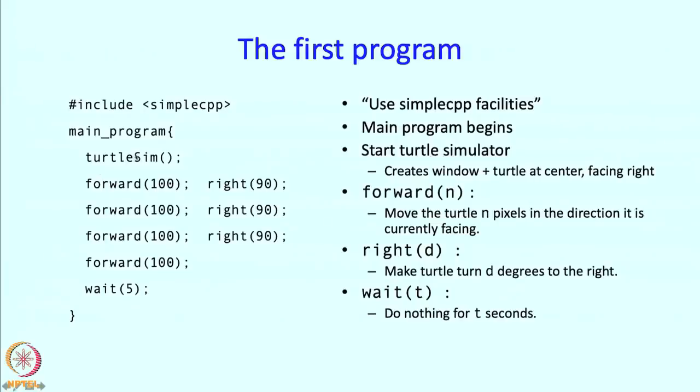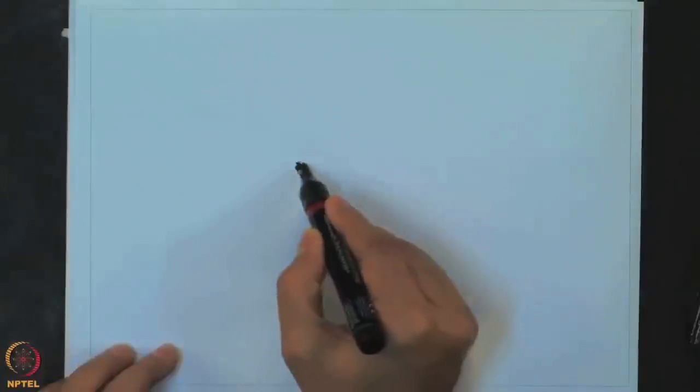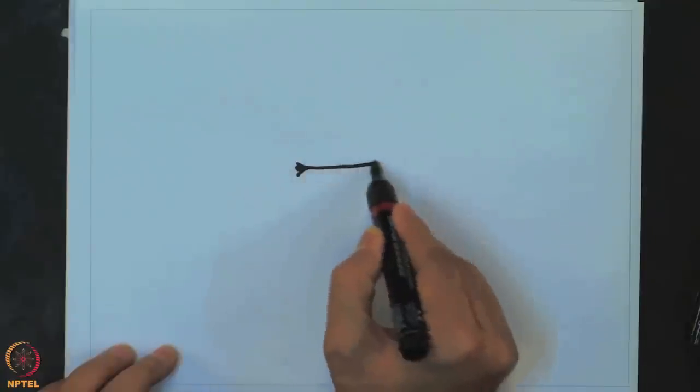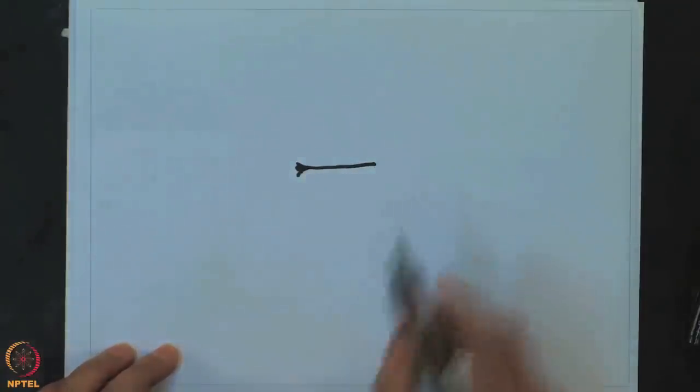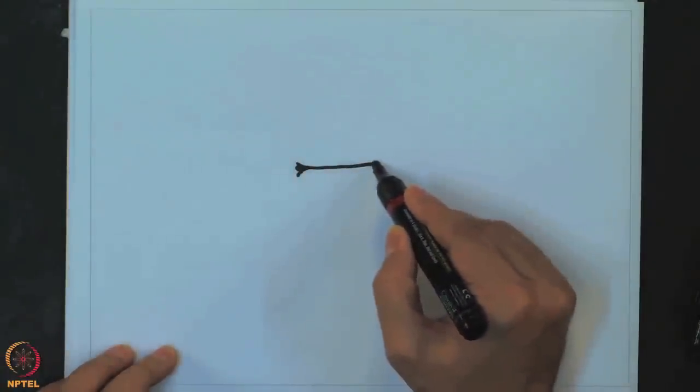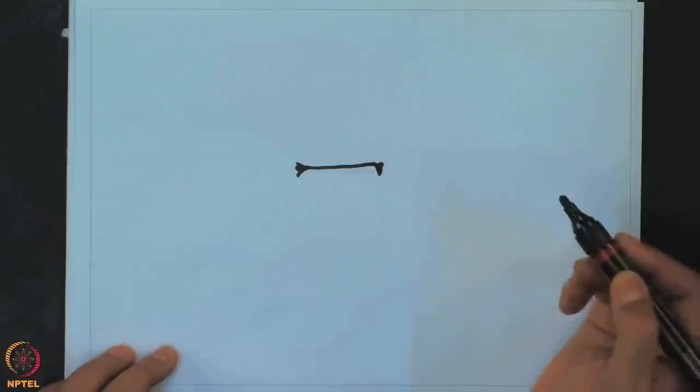Now let us see what drawing the turtle will actually do by looking at the program. So this will start the turtle simulator and it will create a window. Then the turtle will move forward by 100. So the turtle moves forward 100. So if the turtle is over here and facing in this direction, it will move forward by 100 steps. Then it will turn right 90 degrees. So then it will start facing in this direction.